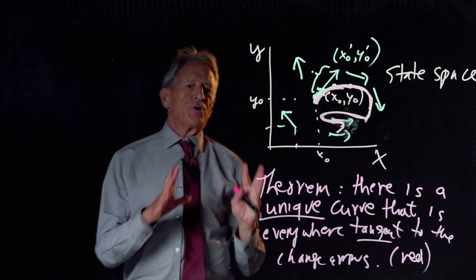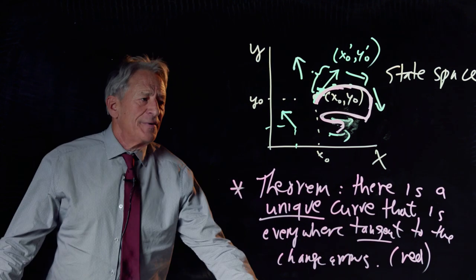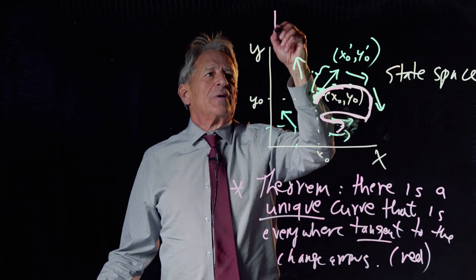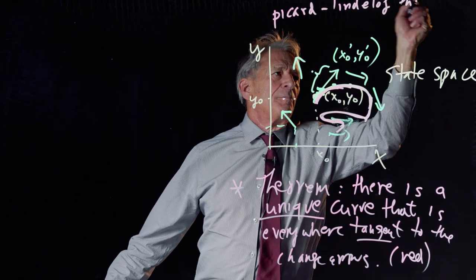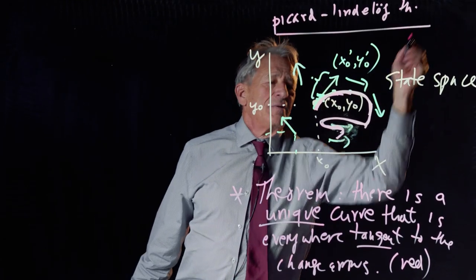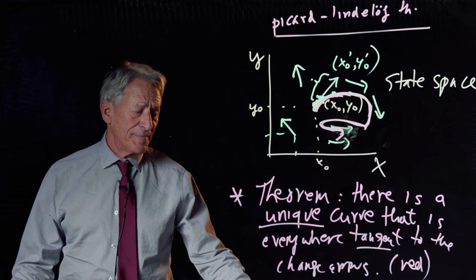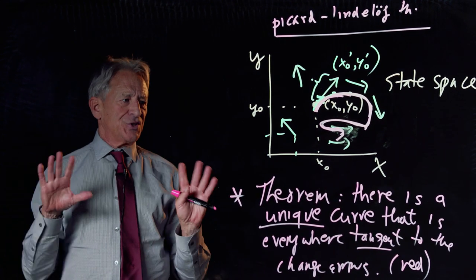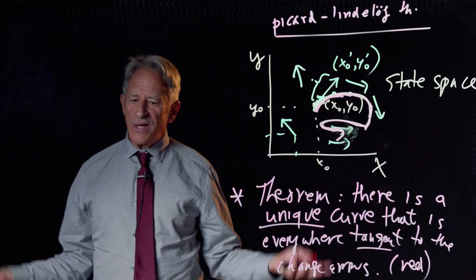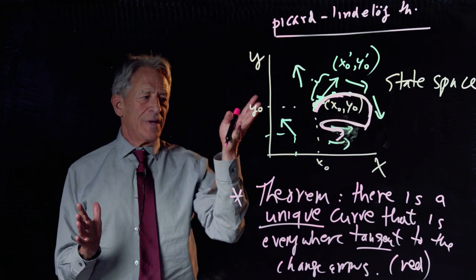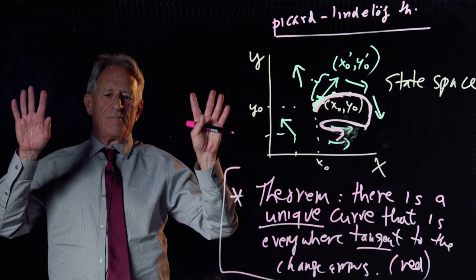And we talked about the red curve as what you would get if you surfed the change arrows everywhere on a very short board. So there is our red curve. The red curve exists. Here is the theorem that says the red curve exists. And we might as well give you the technical name. The technical name is the Picard-Lindelöf theorem. Also known as the Fundamental Theorem on the Existence and Uniqueness of Solutions to Ordinary Differential Equations.